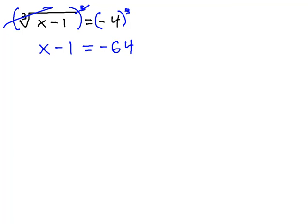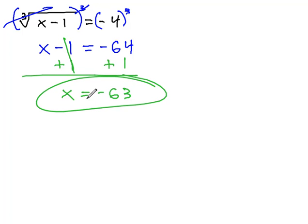And then finally, we can isolate our x by adding 1 to both sides, giving us x is equal to negative 63 for our final solution.